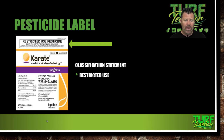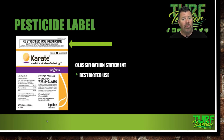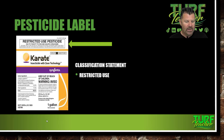Karate is an insecticide here — it is a restricted use pesticide. We're not going to be able to buy it at Home Depot or Lowe's — we're going to have to go to one of our landscape supply houses to get it. This is an insecticide that is restricted use, so that means it is dangerous. Keep it out of the reach of children. It has a warning sign on it. Bad stuff.